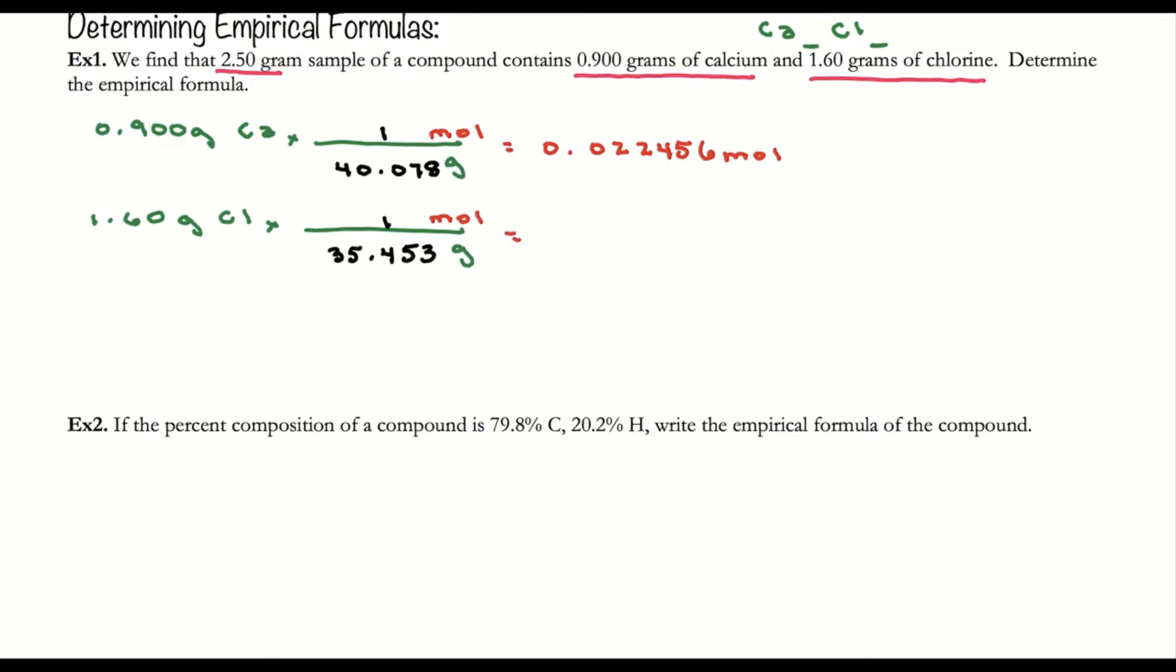These subscripts represent the mole ratio, so I need to compare the number of moles of calcium with chlorine. I want these to be whole numbers, so after converting to moles, I divide by my smallest number of moles: 0.022456. I need whole numbers for my subscripts and a proper whole number ratio.